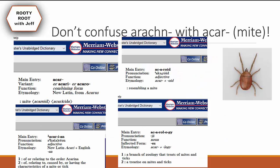So let's move on. Here's something you probably don't want to do — you don't want to confuse 'arachnoid' with 'acar', because that's a bad idea and you might get a word wrong. The root 'acar' means mite, from New Latin. Example words include 'acarian' relating to the order Acarina, 'acaroid' resembling a mite, and 'acarology' — a branch of zoology that treats mites and ticks.